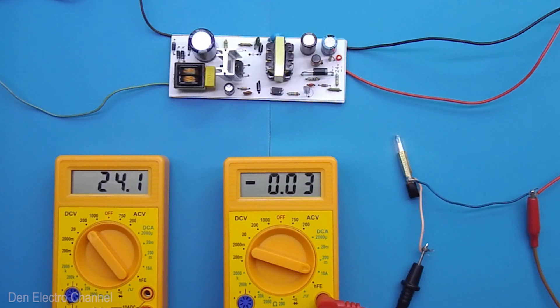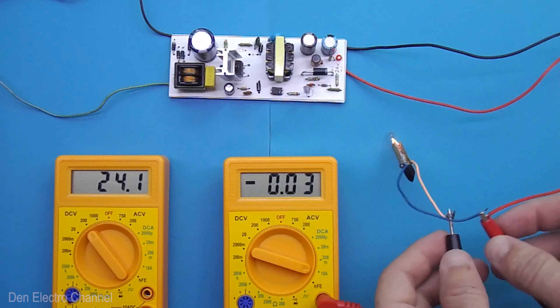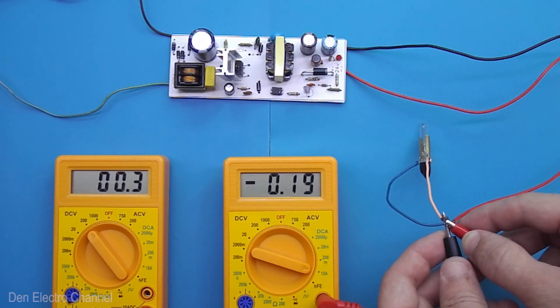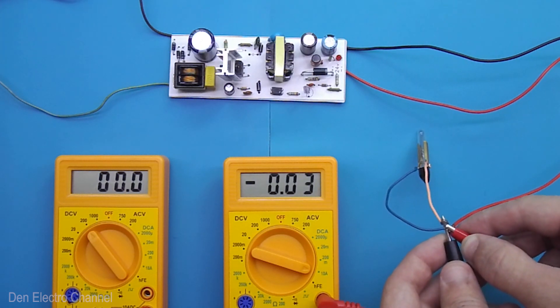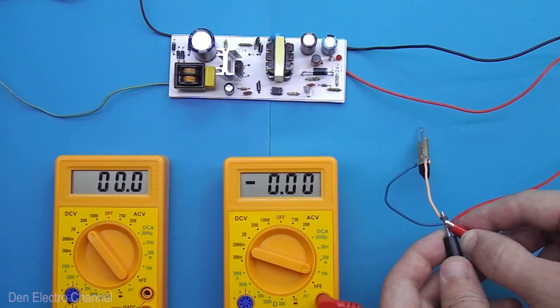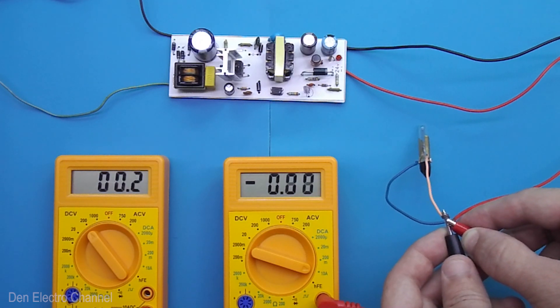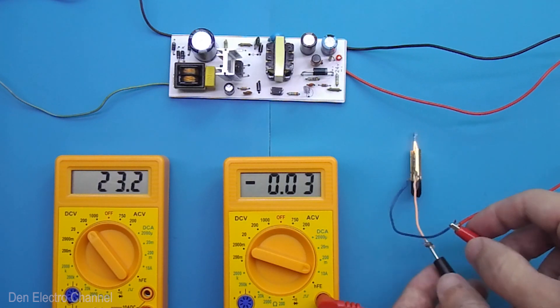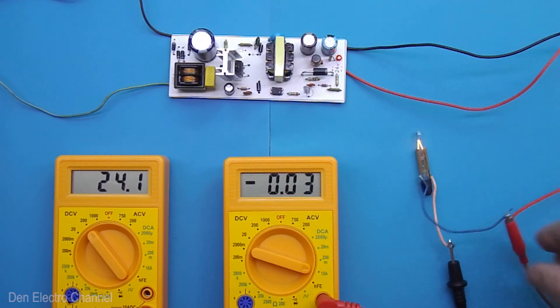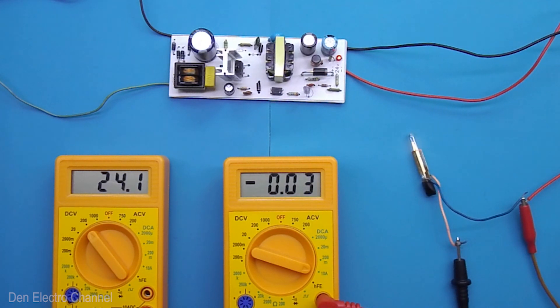This power supply has short circuit protection. Let's see how it works. When I short circuit the probes, the voltage drops to zero, and the current begins to periodically jump. If the short circuit is eliminated, the power supply returns to normal mode.